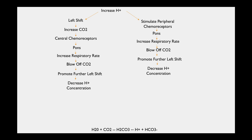Obviously, if we have a decrease in hydrogen ion concentration, these things are going to be opposite: stop breathing as fast, retain CO2, push this equation to the right, and bring the person back to a normal pH. Hope this helps — we'll see you in the next video.